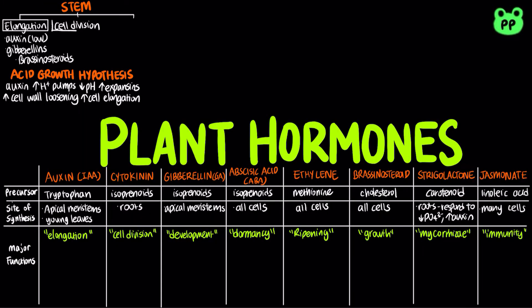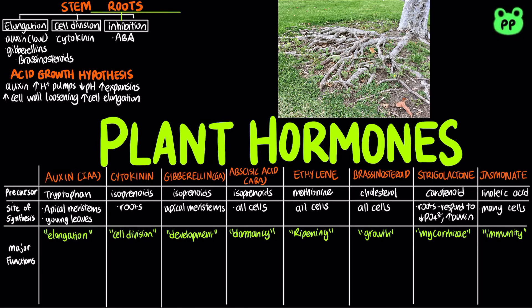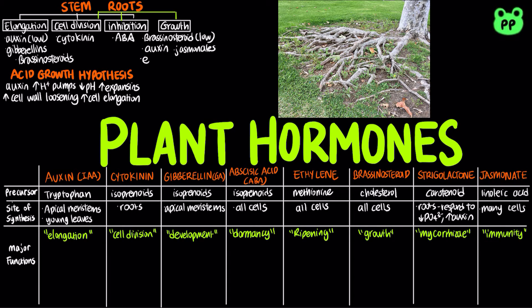Cell division in the stem can be stimulated by cytokinin and brassinosteroids, and stem elongation and cell division are inhibited by abscisic acid, abbreviated as ABA. On the other hand, cell division in roots is also stimulated by cytokinin and inhibited by abscisic acid. Root growth is stimulated by low concentration of brassinosteroids, as well as auxin, jasminates, and ethylene, which also stimulates the growth of root hairs.